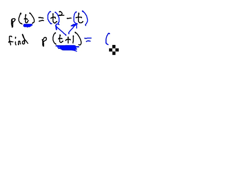So instead of t squared, it's now t plus 1 squared, minus instead of t, it's now t plus 1. And again, notice as I make this substitution, as I make this replacement, we put it in parentheses. t plus 1 is in parentheses.